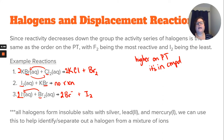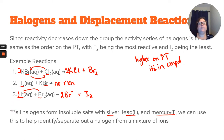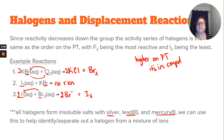All halogens form insoluble salts with silver, lead 2+, and mercury 1+. So we could not do a displacement reaction like the previous example if the metal involved was silver, lead 2+, or mercury 1+. This is something we can actually use to help pull those ions out of solution when trying to separate things.